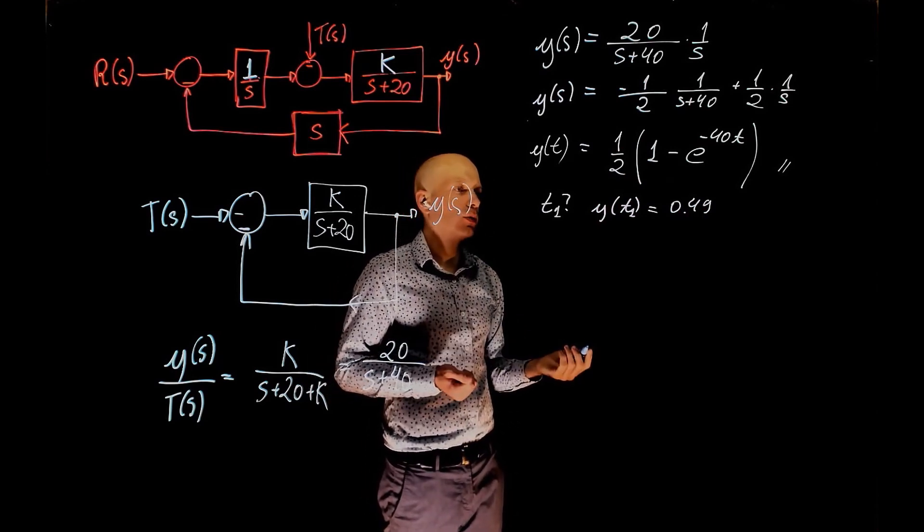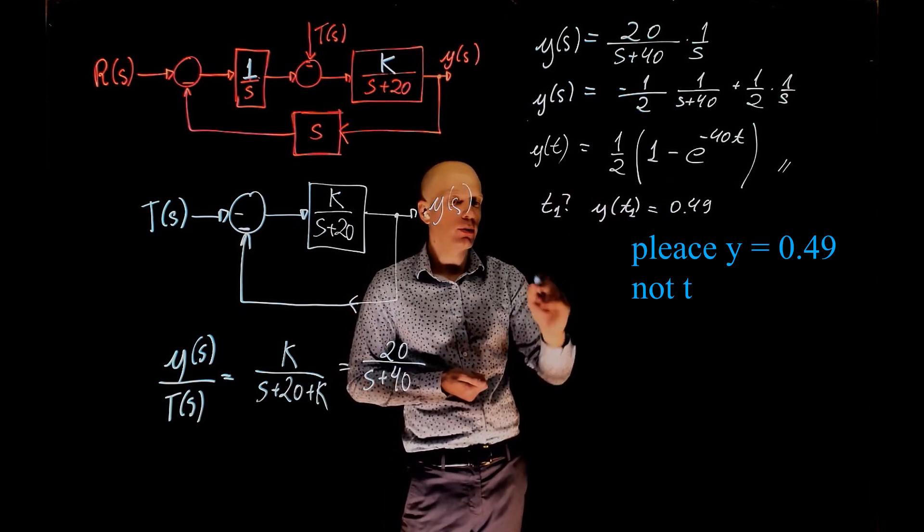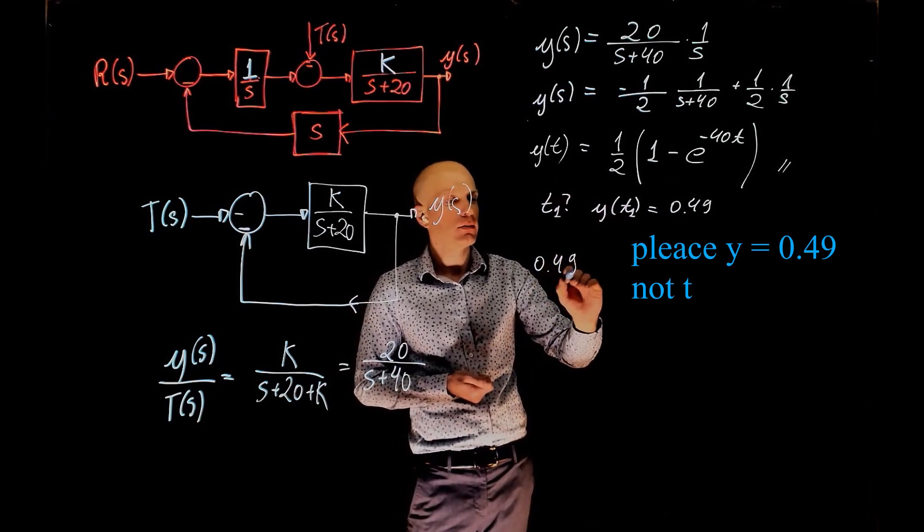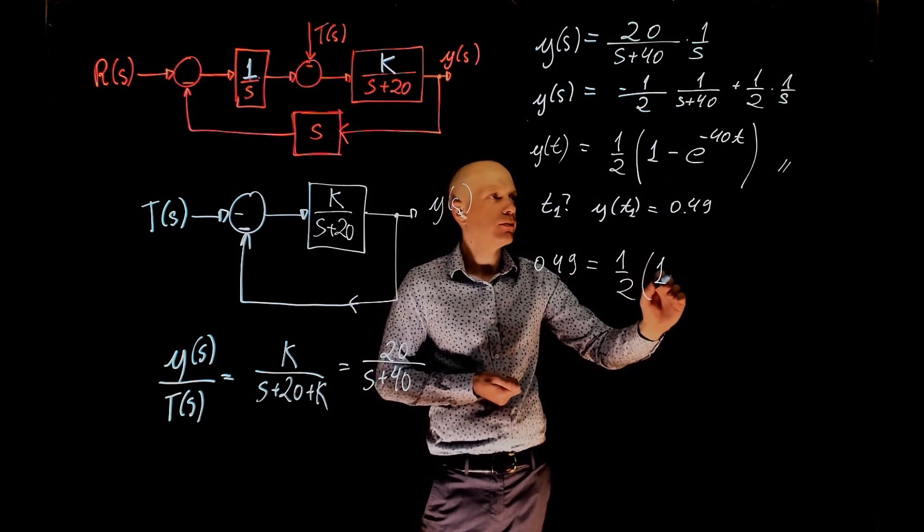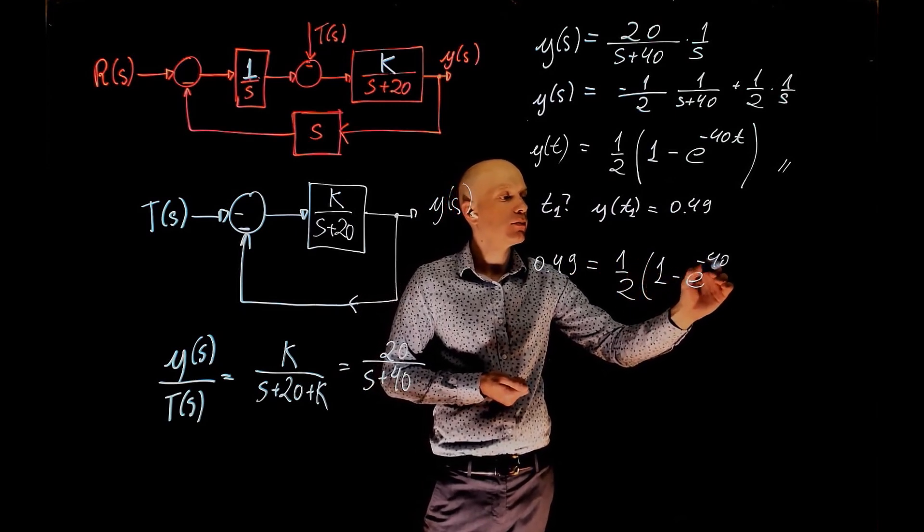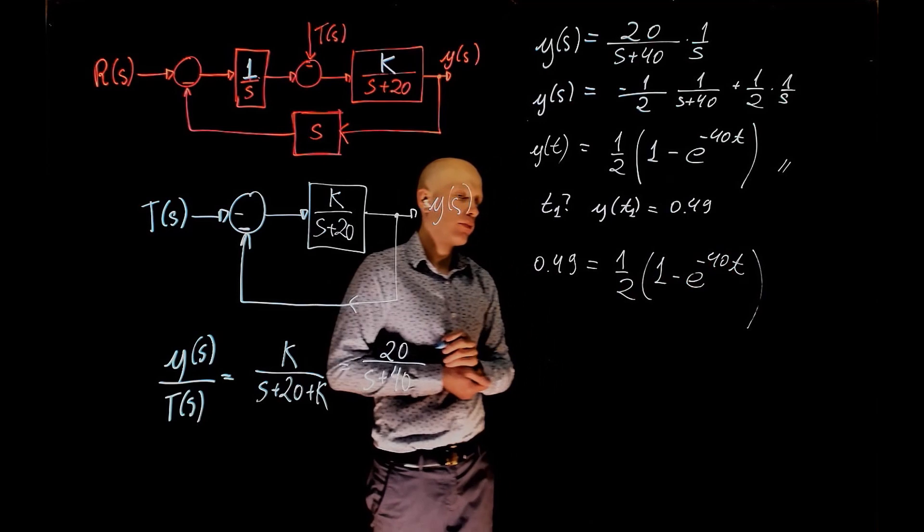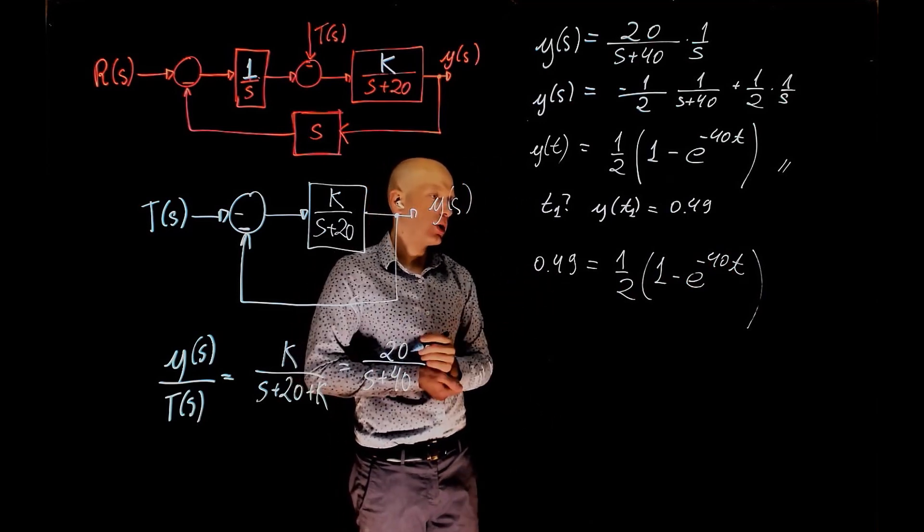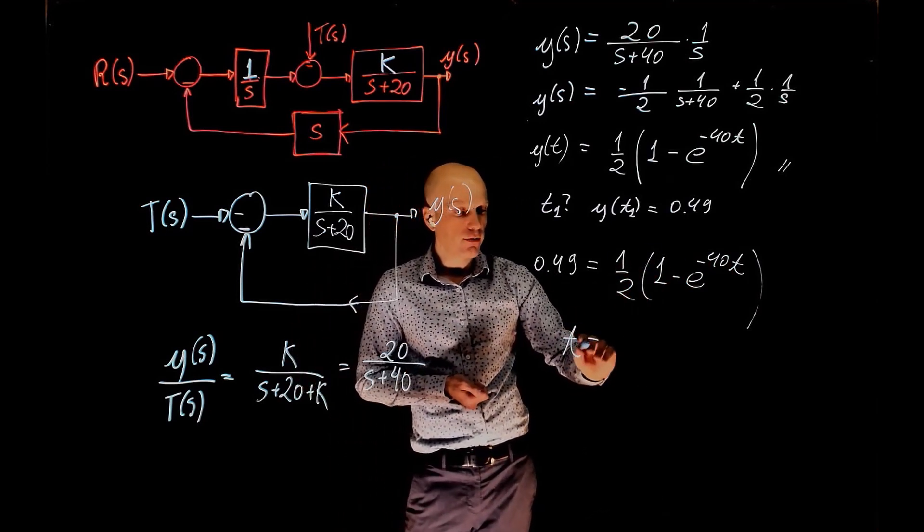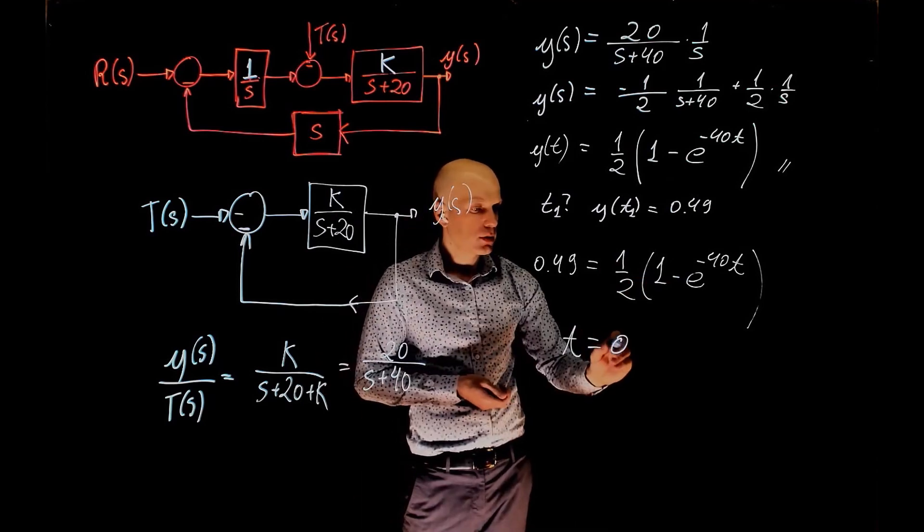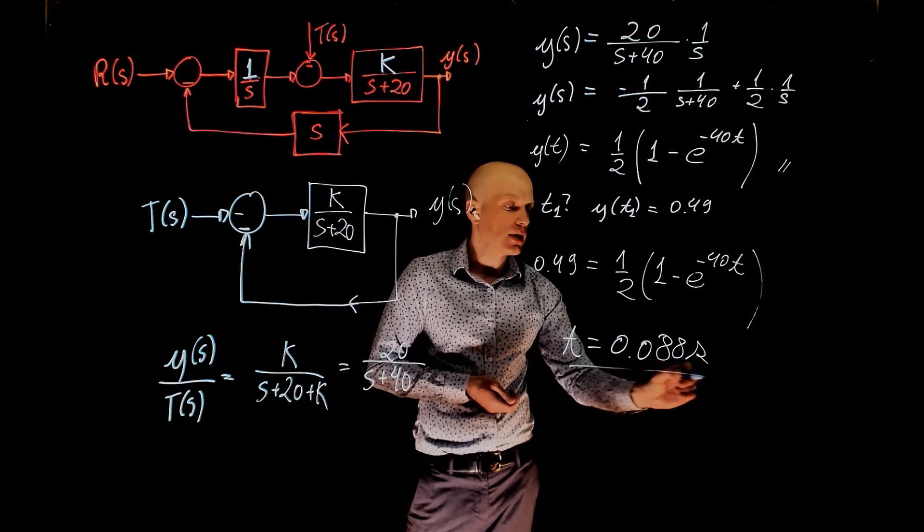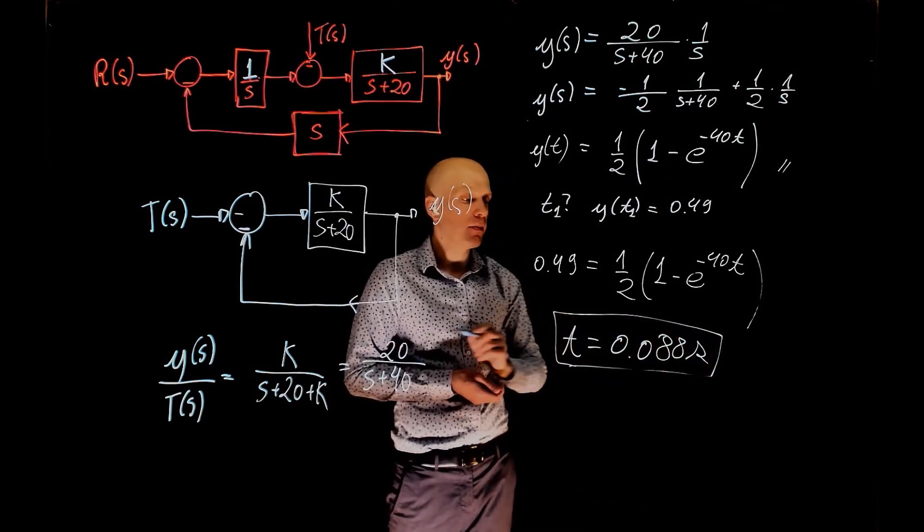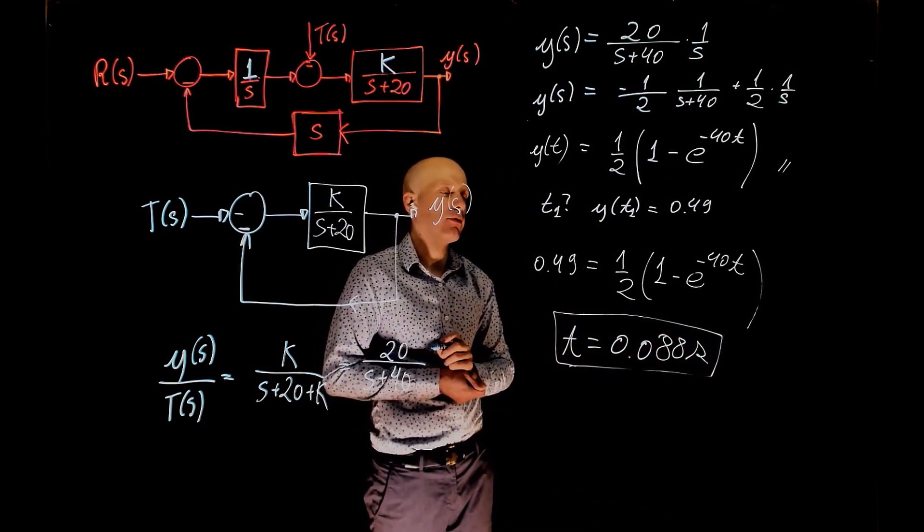How do we do that? Well, that's simple. Just replace y(t) with 0.49 and now solve for t. This is a very simple expression to solve. If you solve for t here, we find a value of 0.088 seconds. And this is the settling time within 2% of the final value.